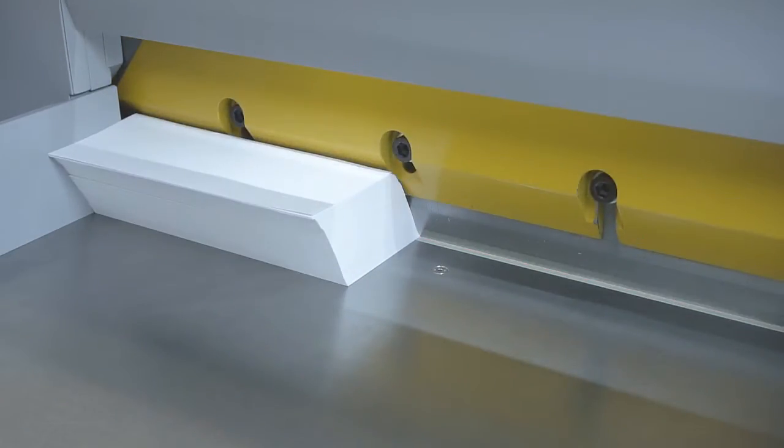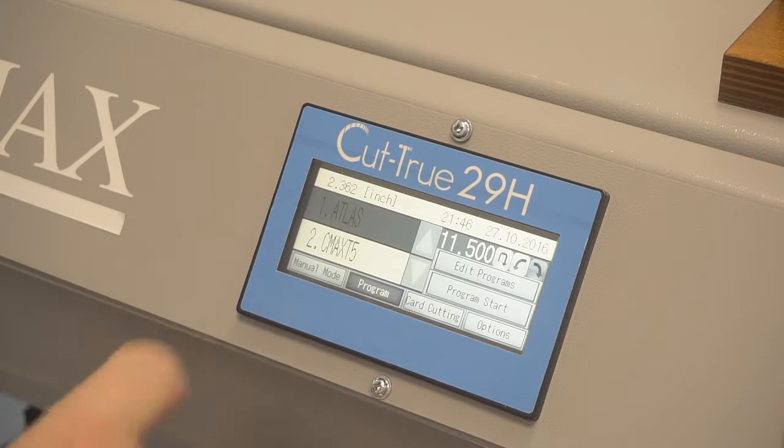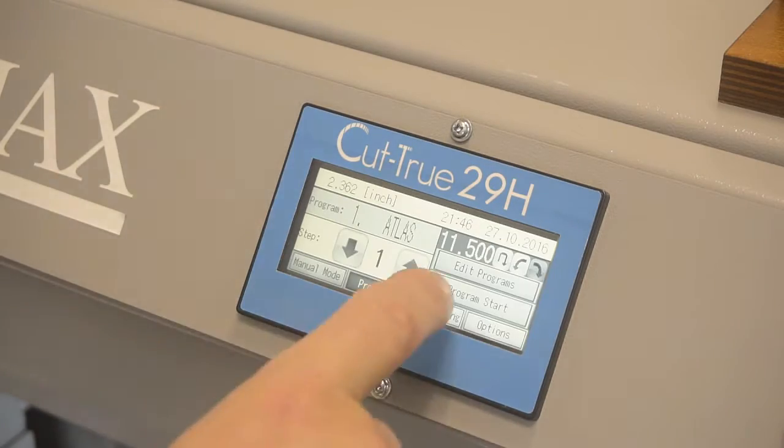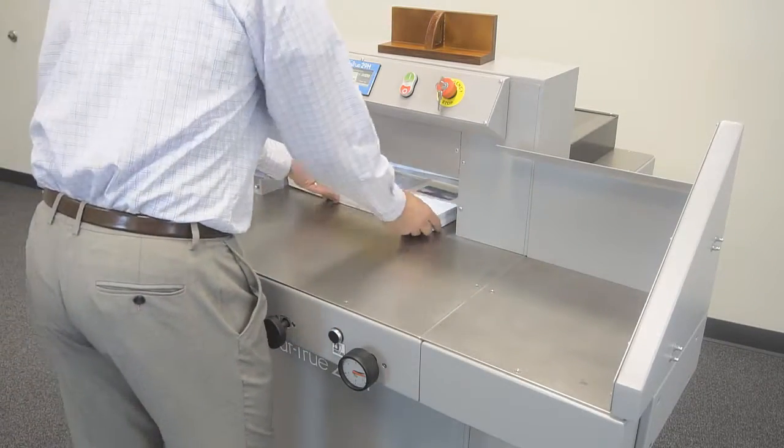Two-button operation engages the clamp and hardened steel blade for crisp, accurate cuts every time. The user-friendly LCD control panel allows operators to program up to 100 jobs, with up to 100 cuts each, while the low-friction work table makes it easy to move and position large stacks of paper.